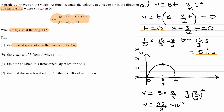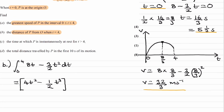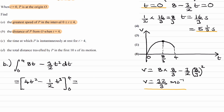For part B, find the distance of P from the origin when t equals 4. We have a graph of velocity against time, and the area underneath this graph gives displacement. We integrate 8t minus 3/2 t squared between 0 and 4. Integrating gives 4t squared minus 1/2 t cubed. Putting in 4 gives 32, and putting in 0 gives 0. So the distance from the origin is 32 meters.